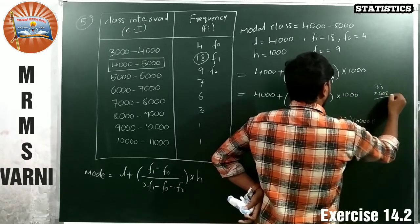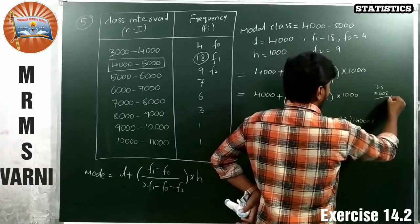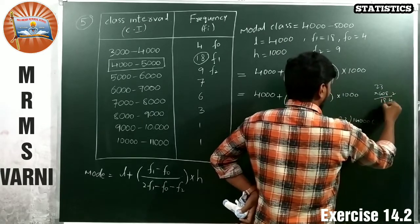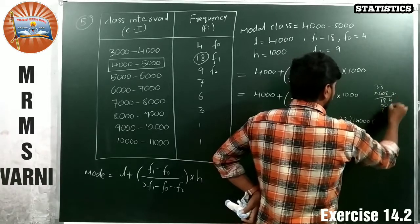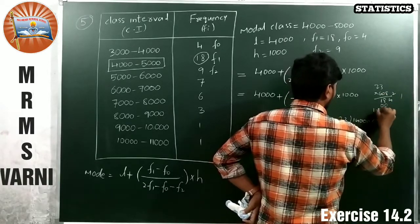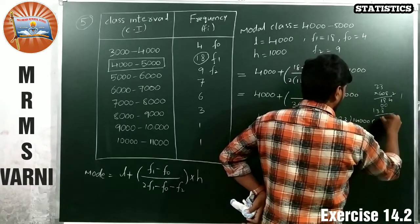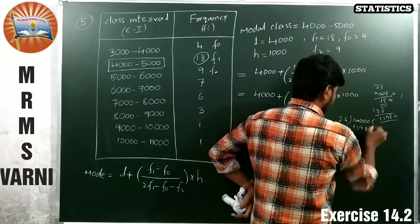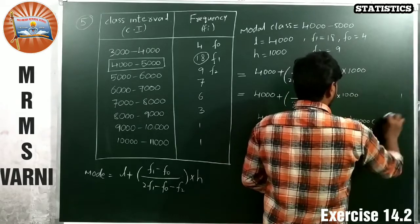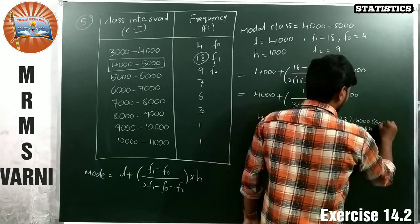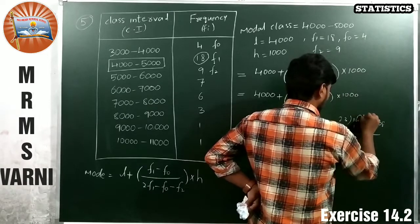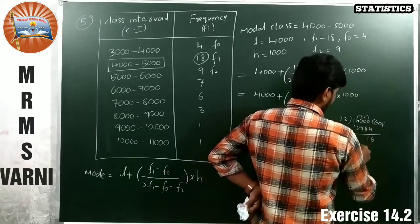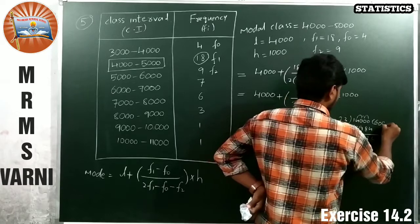We can take one more number also. 23 into 600. 23 into 6. 18, 12, 138. 138. So 10 minus 8 is 2. 5 minus 3 is also 2. Take 0 again.